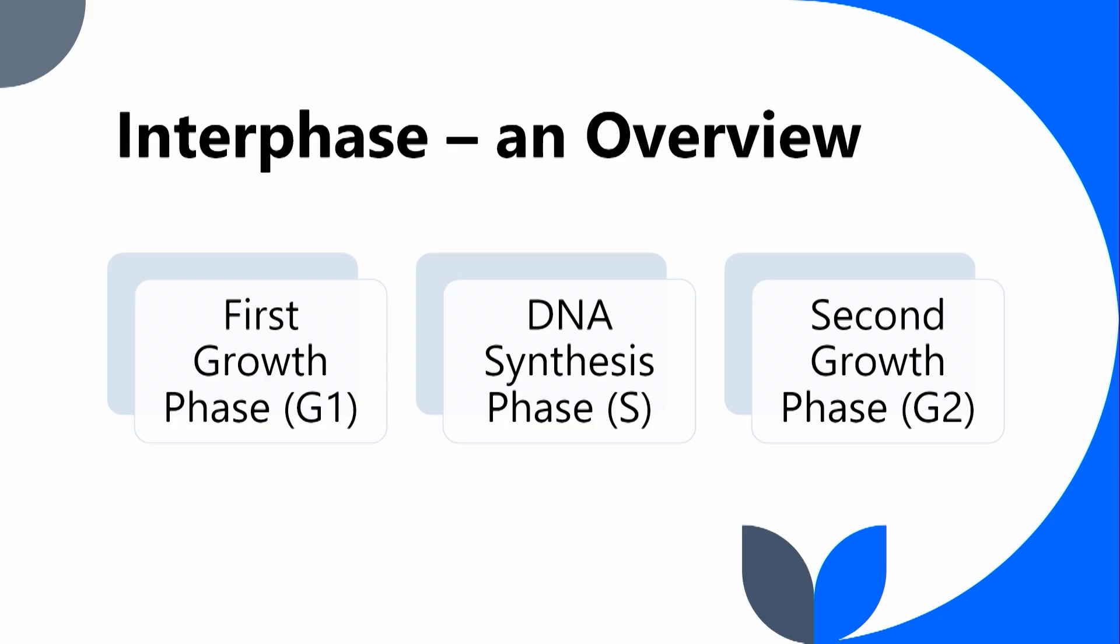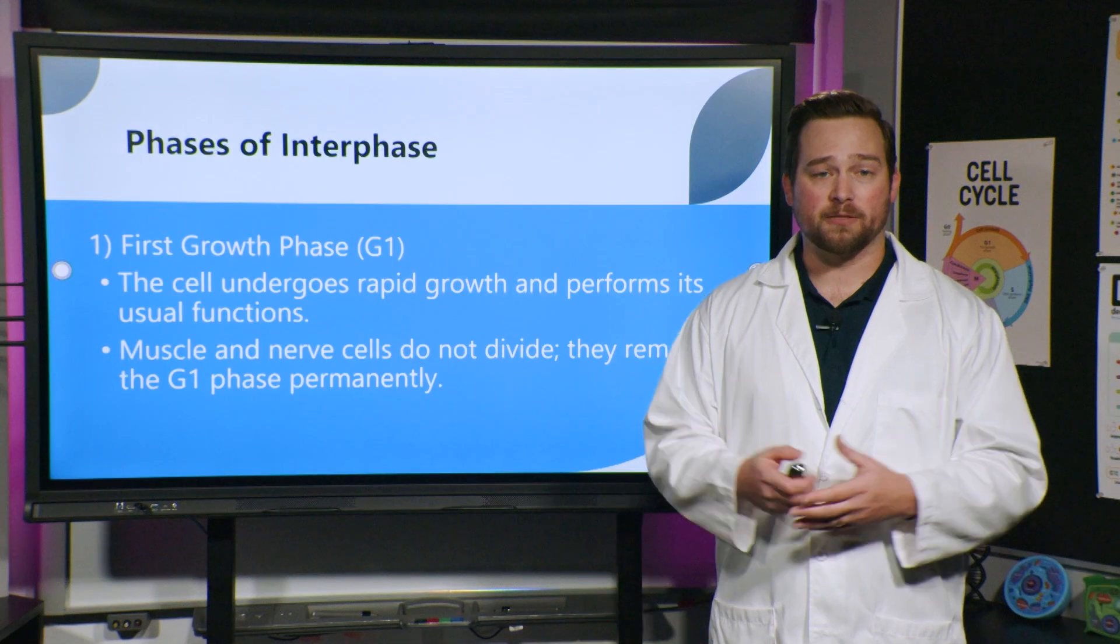And then the last part of interphase is called G2. That's the second growth phase. And unlike the first growth phase, the cell isn't really getting larger here. What it's really doing is preparing for mitosis. So we're going to make extra organelles. We're going to make extra structures that we need to divide. And then that'll end interphase as we start to divide the cell. So let's take a closer look at what's going on in these different parts of interphase.